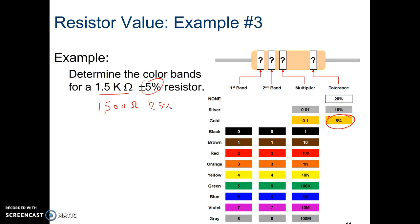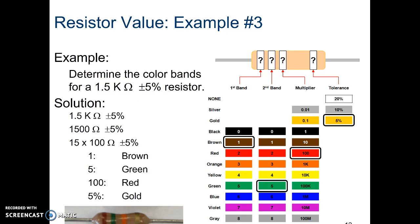If the first value is a 1, second value is a 5, and then what multiplier do we need to get 1,500? So brown, green, the multiplier needs to be red.